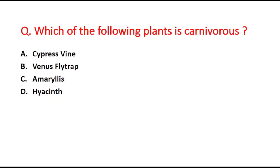Next question: which of the following plants is carnivorous? Option A is cypress vine, option B is Venus flytrap, option C is amaryllis, and option D is hyacinth. The right answer is option B, Venus flytrap.